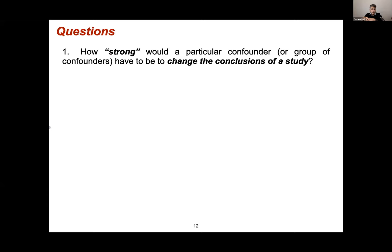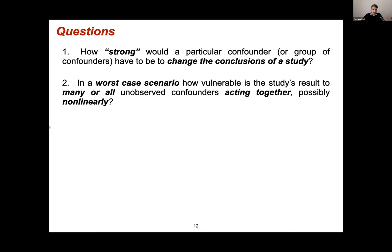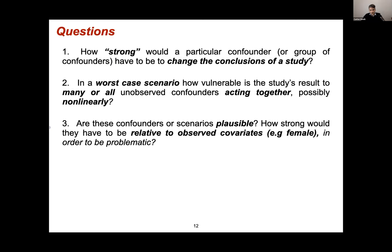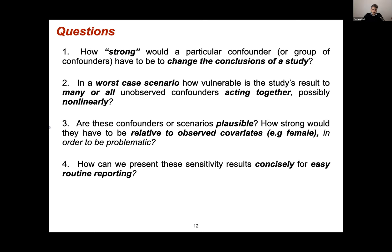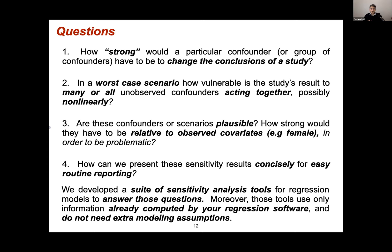The questions we'd like to answer with our tools are: How strong would a particular confounder or group of confounders have to be to change the conclusions? In a worst-case scenario, how vulnerable is the result to many or all unobserved confounders acting together, possibly nonlinearly? Are these confounders plausible — how strong would they need to be relative to some important observed covariate such as female? And can we present all these sensitivity results concisely for easy routine reporting, just like a p-value or confidence interval?